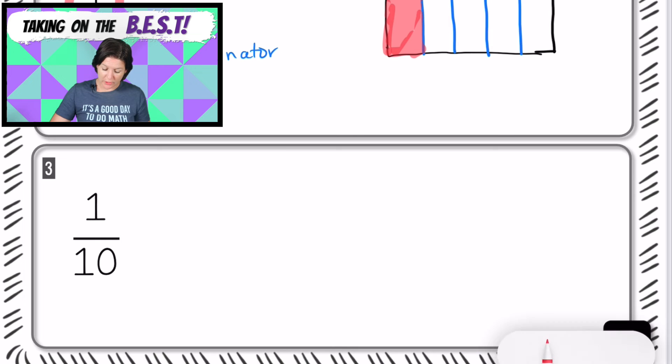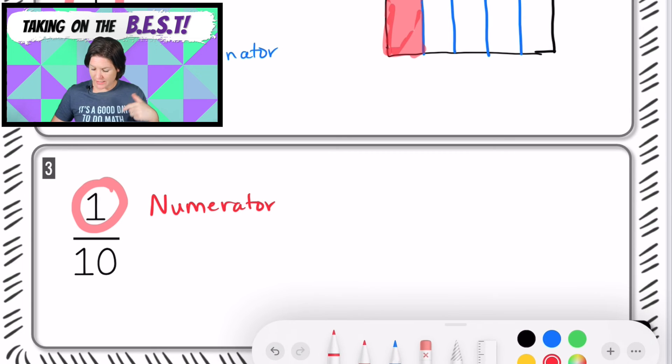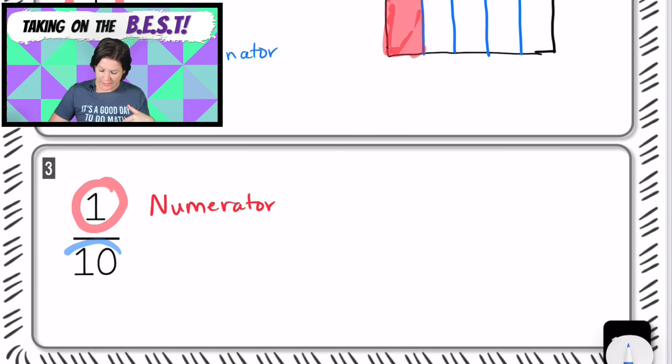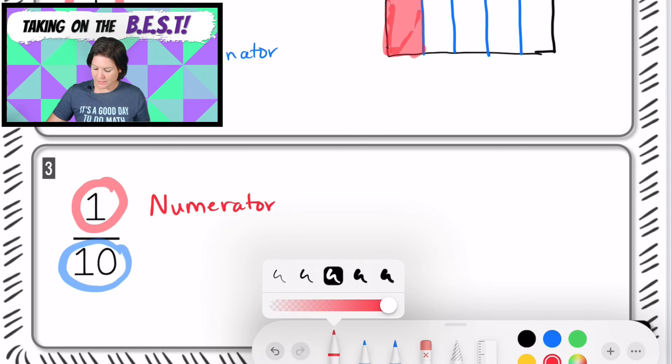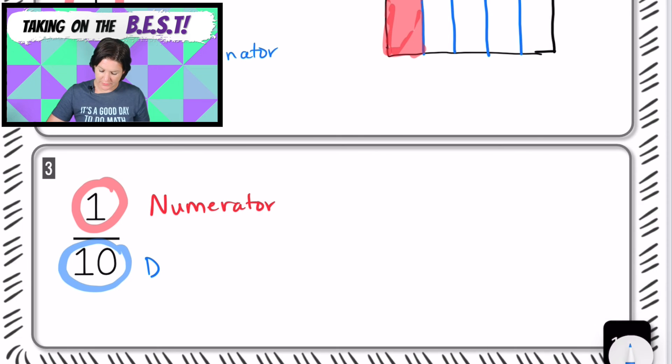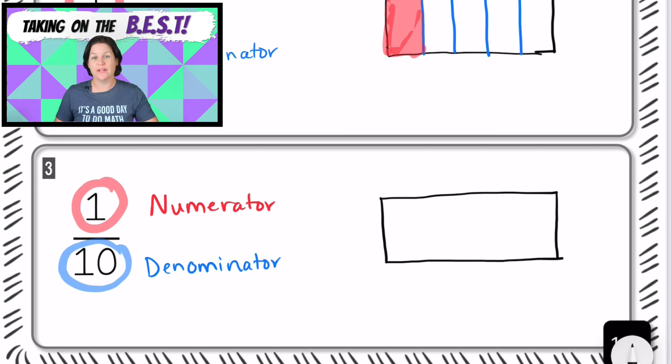For number three, we know we're working with a unit fraction because we have a one in the numerator. And when we jump down from the fraction bar, that is the denominator, and that's the total number of equal parts. Let's go ahead and draw a rectangle.